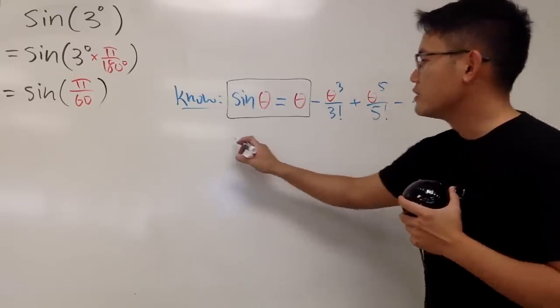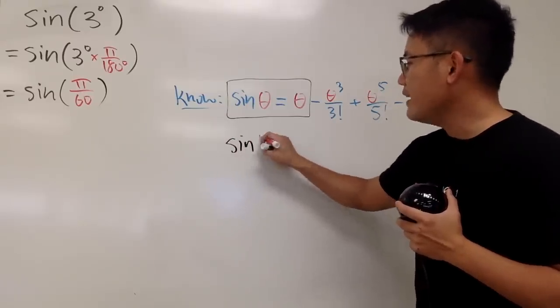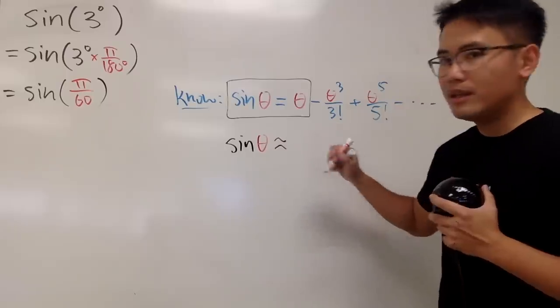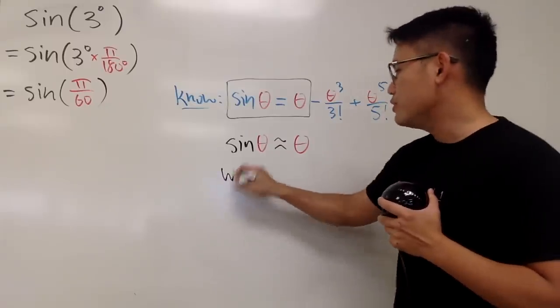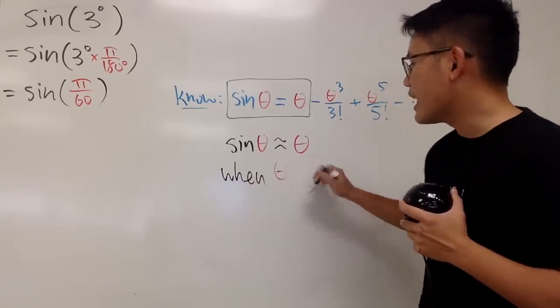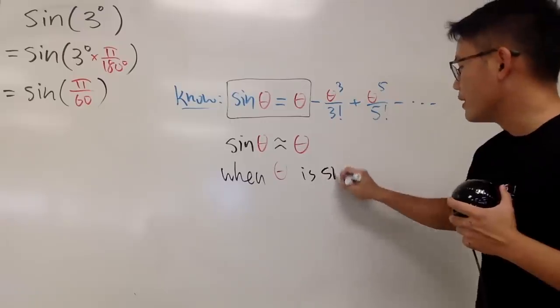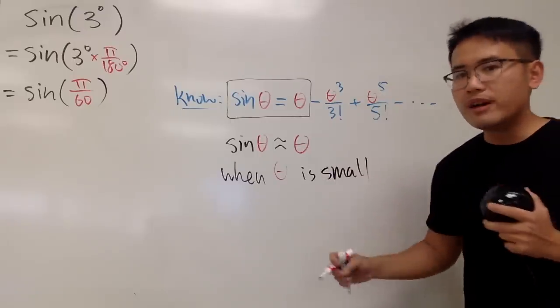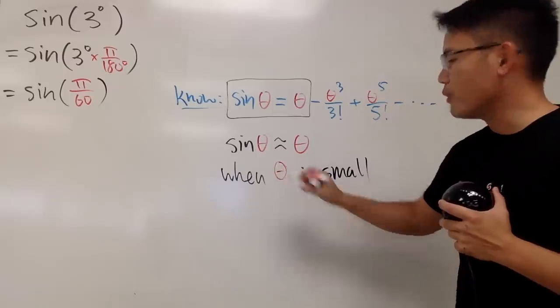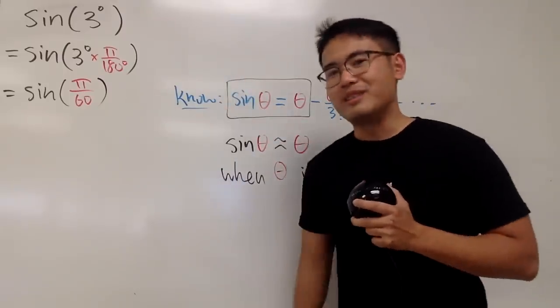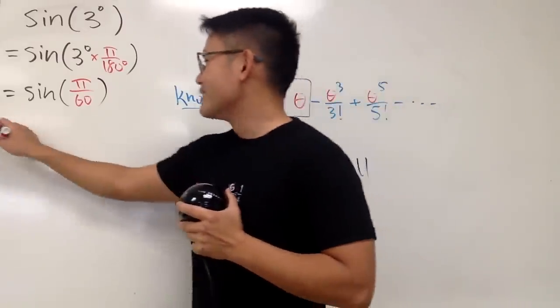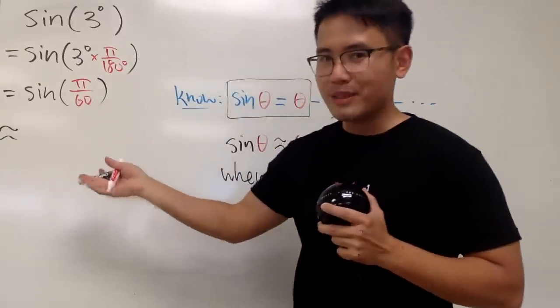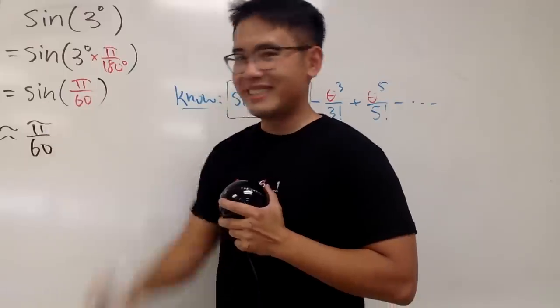So we can write sine theta is approximately equal to just theta. But you do have to attach a little condition: this is when theta is small. And you might be wondering, how small is small? Well, 3 degrees is of course small. Pi over 60 is of course small. So you can really just say this is approximately pi over 60.